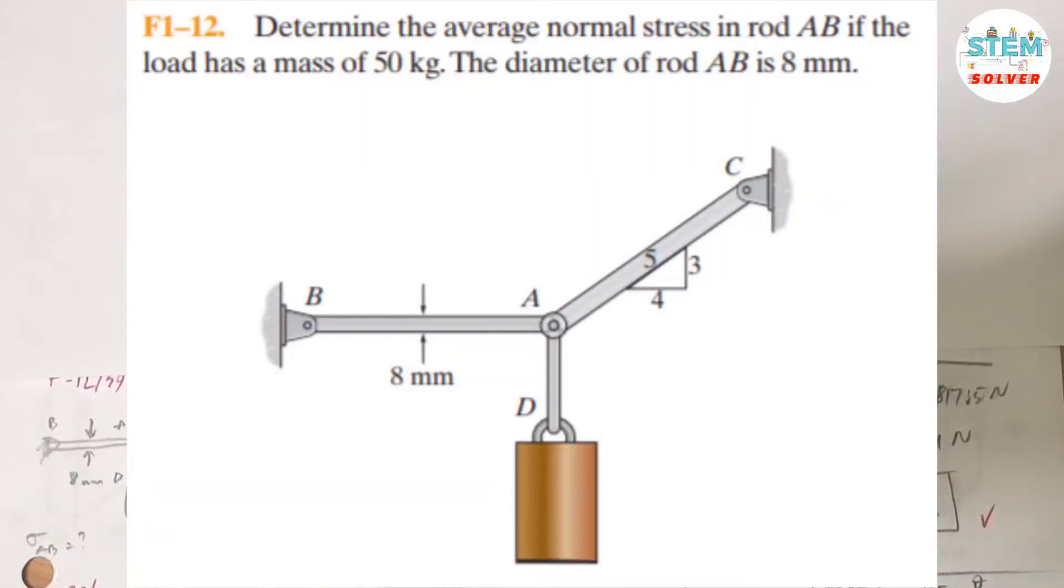Determine the average normal stress in rod AB if the load has a mass of 50 kg. The diameter of rod AB is 8 mm.